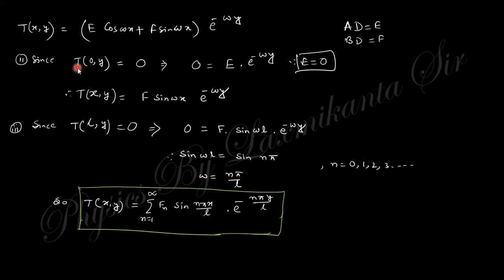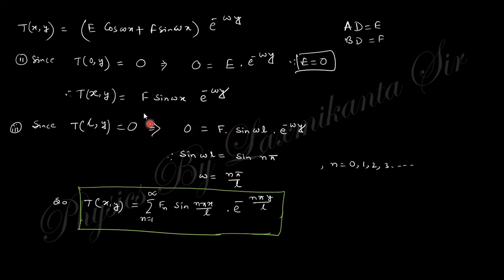The next condition: at x equals 0 for any y, T equals 0. Put x equals 0 — sin(0) is 0 and cos(0) is 1 — so you get E equals 0. With E equals 0 substituted, apply the condition T(L, y) equals 0. This gives F·sin(ωL) equals 0, which means sin(ωL) equals 0, which equals sin(nπ). So ω equals nπ/L, where n equals 1, 2, 3, etc.